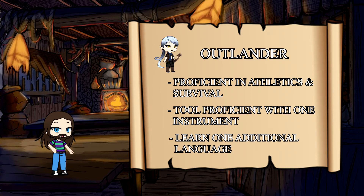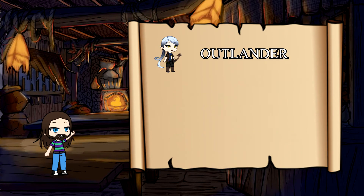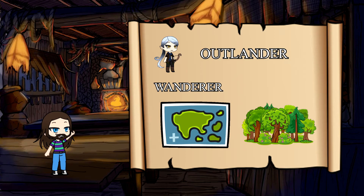You'll be able to learn one additional language, and you'll also gain some additional equipment such as a staff, hunting trap, trophy of a small animal you killed, a set of traveler's clothes, and a small patch with 10 gold. Not too shabby! As for the Outlander's feature, it is known as Wanderer. This means you have an excellent memory for maps and geography, and you can always recall the general layout of terrain, settlements, and other features around you.